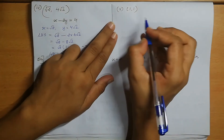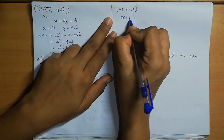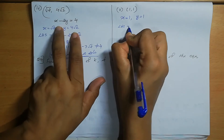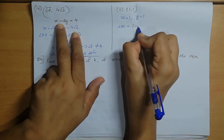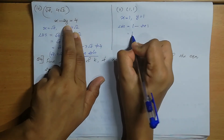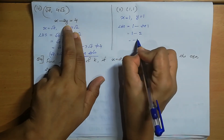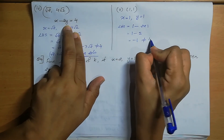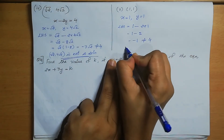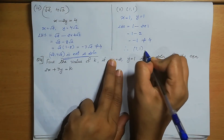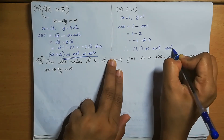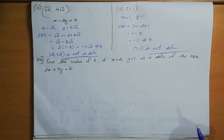Fifth, check (1, 1): x=1, y=1. LHS = 1 − 2×1 = 1 − 2 = −1. Since −1 ≠ 4, LHS ≠ RHS. Therefore, (1, 1) is not a solution of this equation.